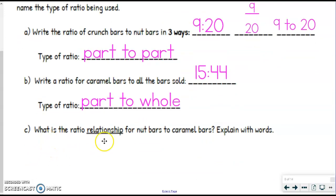So we are going to write a ratio relationship. So we want to know what is the ratio relationship for the nut bars to caramel bars. We're explaining with words. Now, this is just a fancy way of saying something we already know. So I'm going to tell you the kind of fill in the blank almost kind of way to do this.